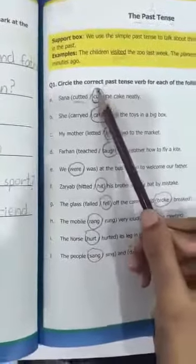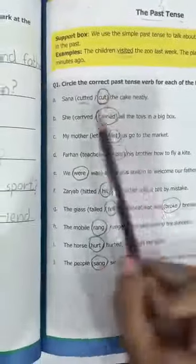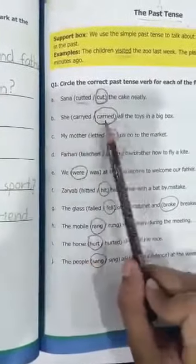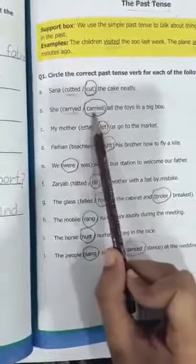Option B is 'Sana carryed/carried/carried all the toys in the box.' These spellings are wrong and the correct spelling of the second form of 'carry' is 'carried,' C-A-R-R-I-E-D, so you will circle that.